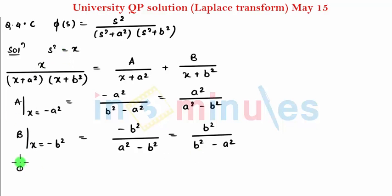We can directly write phi of S is equal to, after substituting A in place of X, capital A divided by S squared plus A squared, plus capital B divided by S squared plus B squared.